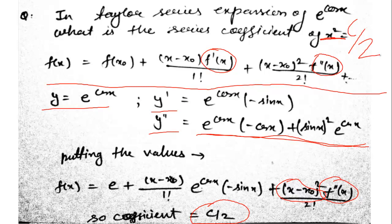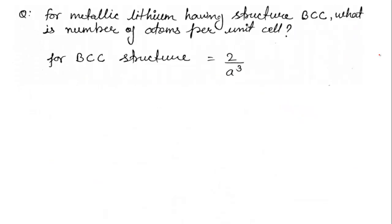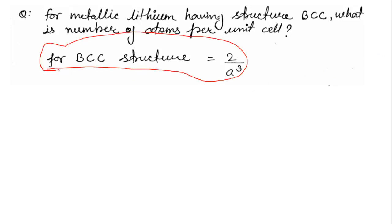Next question: for metallic lithium having BCC structure, what is the number of atoms per unit cell? For a BCC structure, the formula gives 2 atoms per unit cell — the value is 2/a³ in terms of number density. The derivation is covered in my solid state physics video playlist. In BCC, the number of atoms in one unit cell is 2.